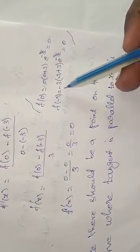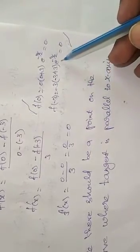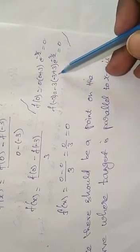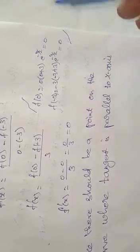f(-3) = -3(-3+3)e^(-π/2). -3 + 3 is 0, so the whole term will get the value 0.